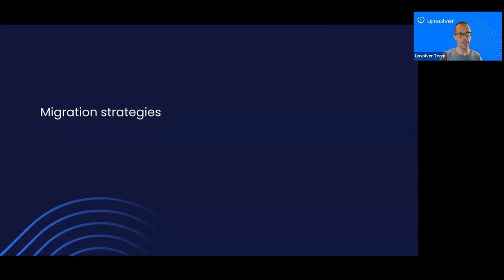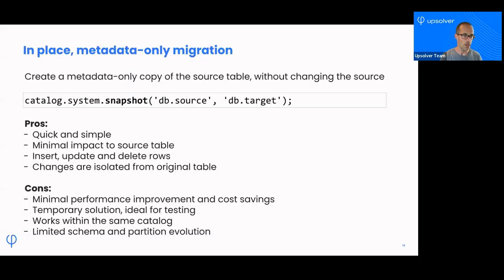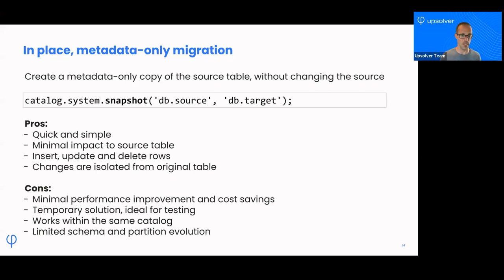Let's jump in and get into more of the details of these migration strategies. The first one is called in-place migration — it's based on Iceberg's snapshot capability. Here is a simple Spark syntax for how to use the snapshot. It has more properties to it, but this is the basic syntax: you run the snapshot command, give it the source table and the target table within the same catalog, and all it does is create a new Iceberg table called target, building out the metadata and pointing it to your existing files.